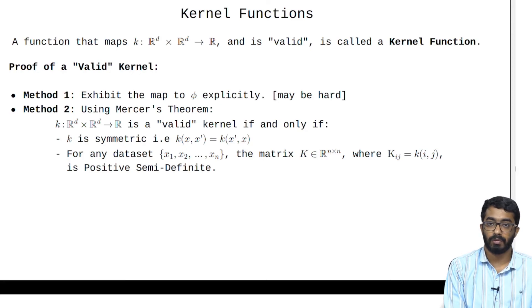So there are two methods to prove that a kernel is valid. The first method is to exhibit the map to phi explicitly. Now this may be hard, so that is why we use the second method using Mercer's theorem. A kernel function R^d cross R^d to R is valid if and only if k is symmetric and k is positive semi-definite, that is its eigenvalues are greater than or equal to 0.